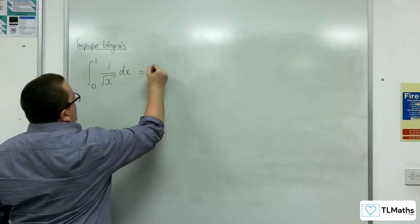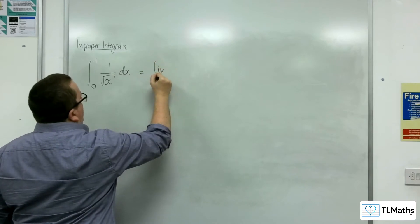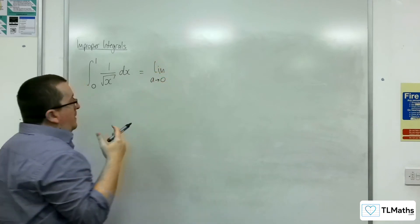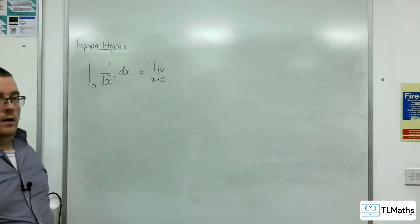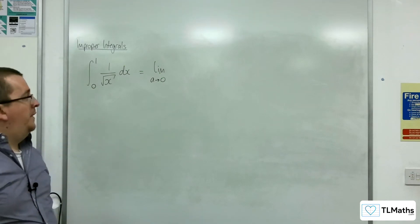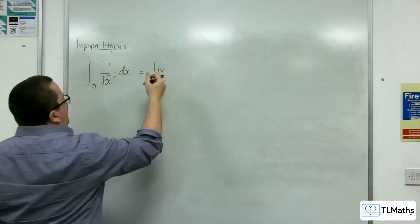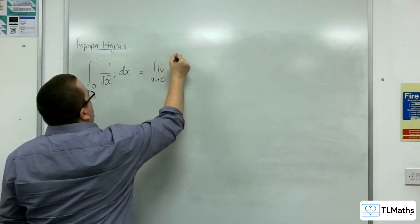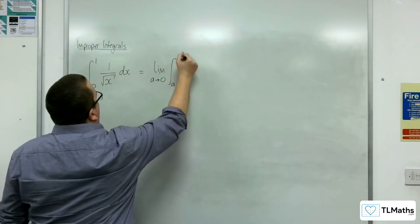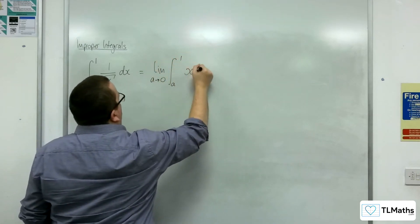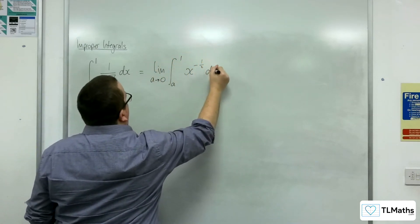This would be the limit as a tends to 0, because when x is 0, the function is undefined. That's why it's an improper integral. We write the integral between a and 1 of x to the power of minus one half dx.